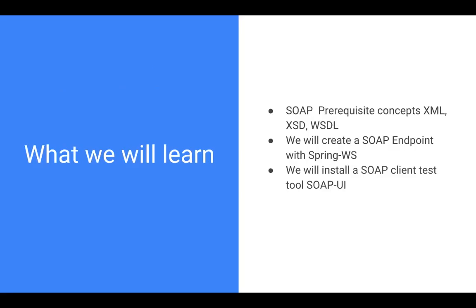So what will we learn? First, we'll have a look at the concept of the SOAP XML messages that come from a client and go to the server, how these XML messages need to be well-defined according to the XML Definition Language, or XSD, and how the XSD is used to create the WSDL for us. After that, we will have a look at how to create a Spring endpoint with everything that Spring Web Services provides for us.